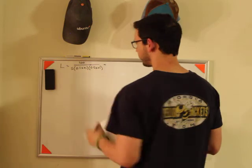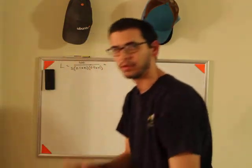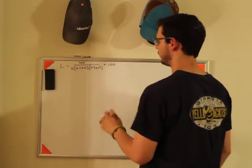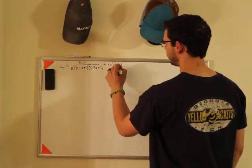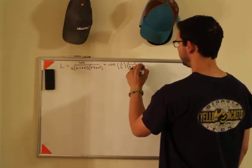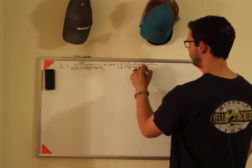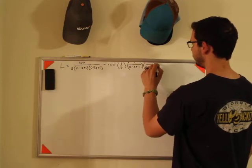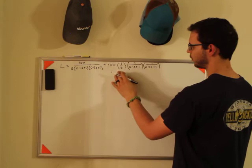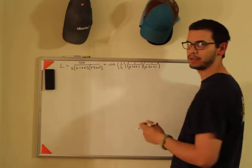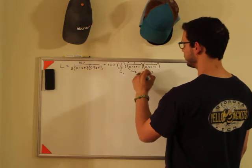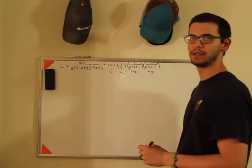What I'm going to do is break this up into three separate transfer functions. First I'm going to put the 100 out here and leave it off to the side, then I'm going to do 1 over S, then 1 over 0.1S plus 1, and then 1 over 0.5S plus 1. The reason why I did this is because each one of these is basically in the same form. I'm going to call this G1, this G2, and this G3, and I'm going to call this K.